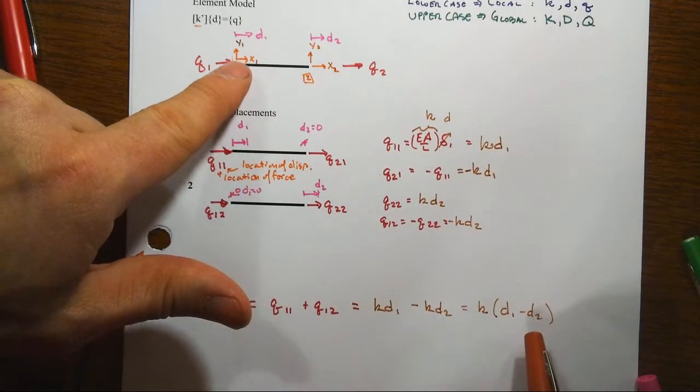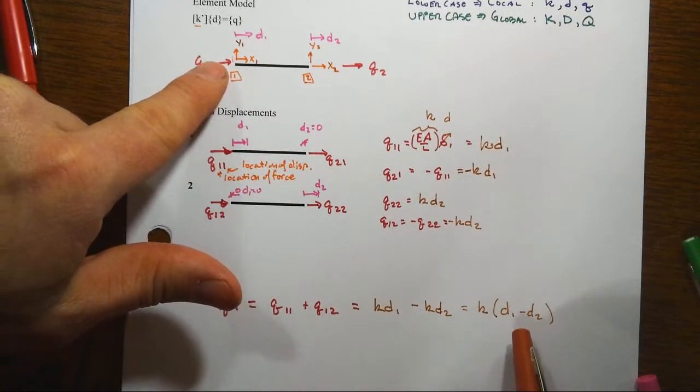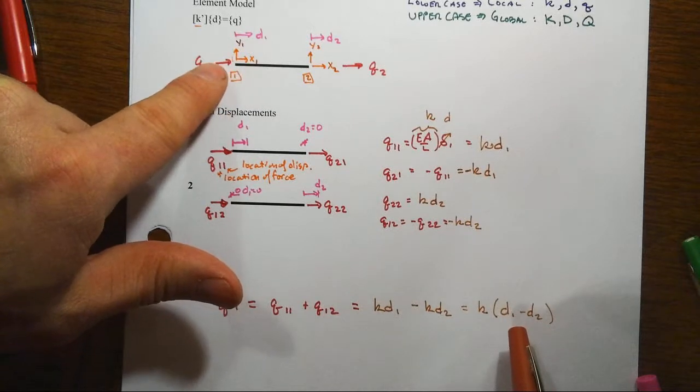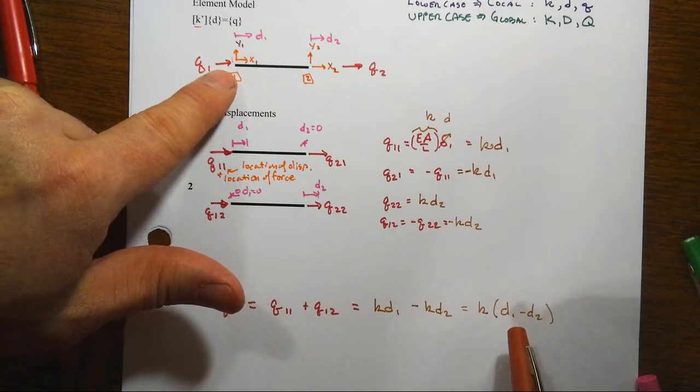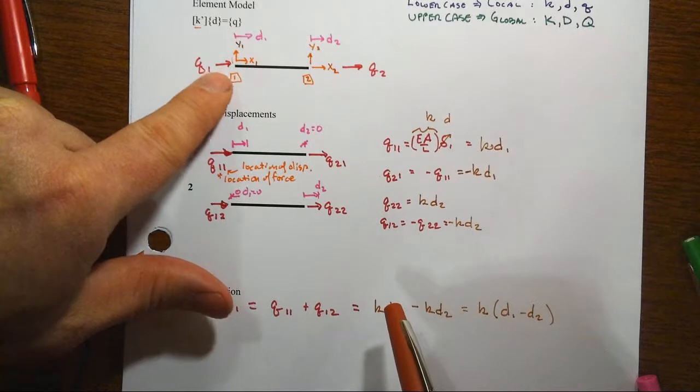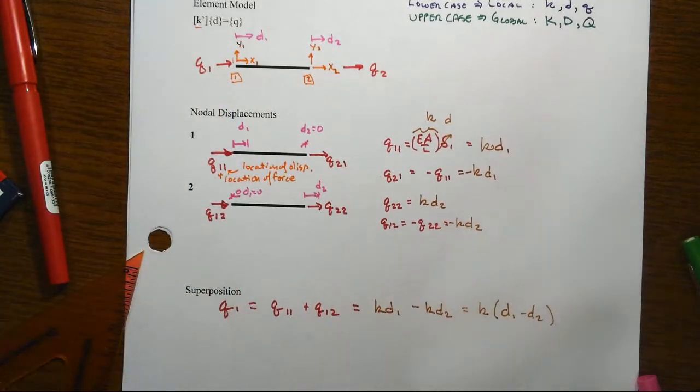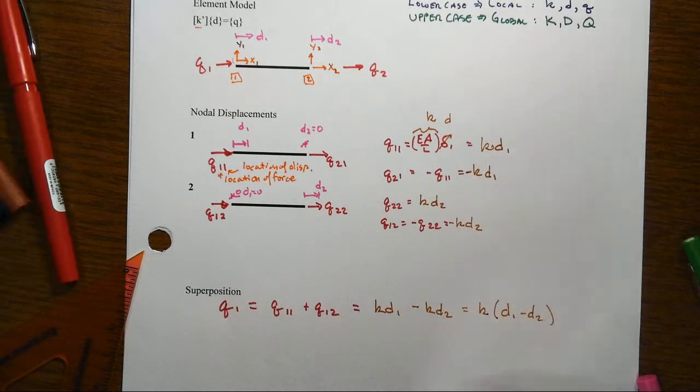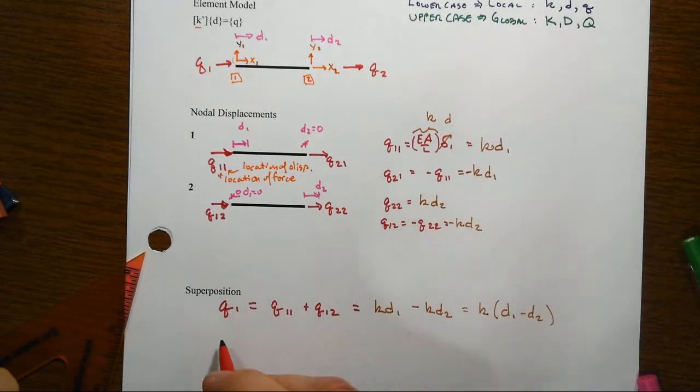If d2 is larger, then the q1 value is going to turn out to be negative or opposite as shown. And of course, if d2 is larger than d1, that means that we're going to end up with tension in the member, and so q1 would be going in the other direction. So that physically makes sense.